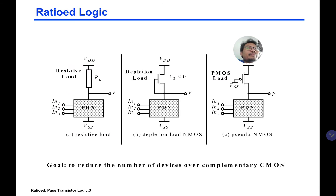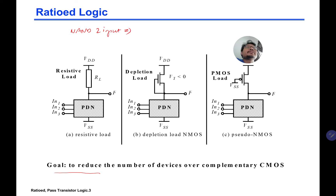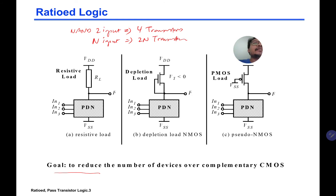For that, they came up with a circuit structure called ratio logic. The goal is to reduce the number of devices over static complementary CMOS. In static CMOS, a two-input NAND has two NMOS and two PMOS — four transistors total, so N inputs correspond to 2N transistors. In ratio logic, they show three types of structure: resistive load, depletion load NMOS, and pseudo NMOS.